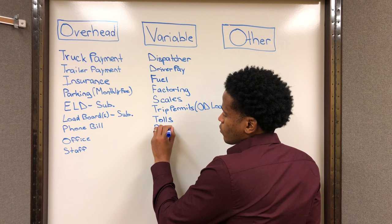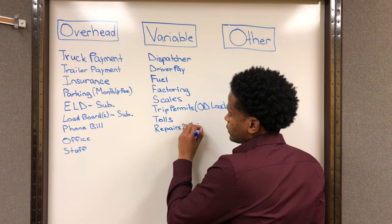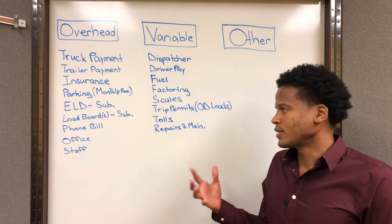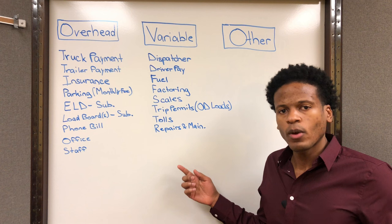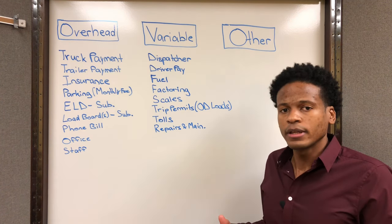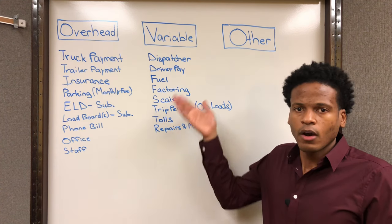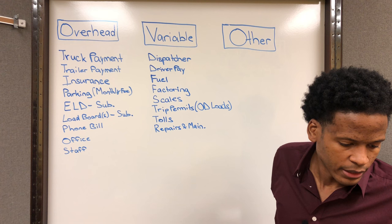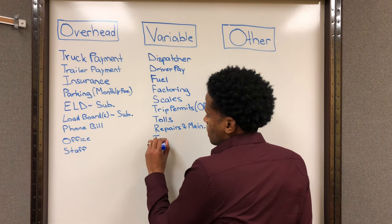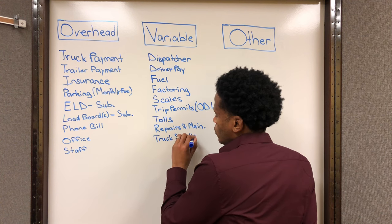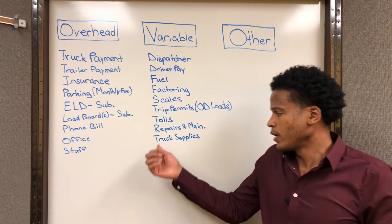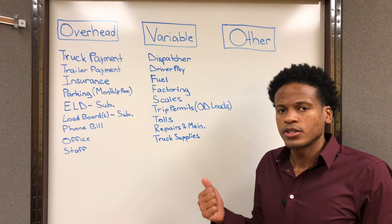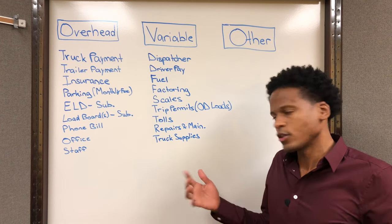Another big variable expense is repair and maintenance — oil changes, engine work, truck washes, tires — anything to keep your equipment operational and functional. That typically varies based on how hard you're running; if you're running harder, you may have higher repairs and maintenance that month. Another variable expense is truck supplies. For all my flatbedders and hotshot guys out there, this could be things like straps, tarps, chains, and that sort of thing that you keep on the truck.